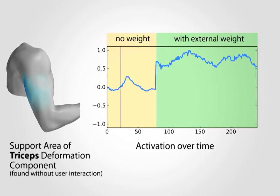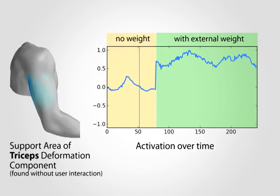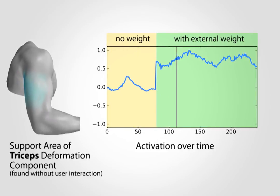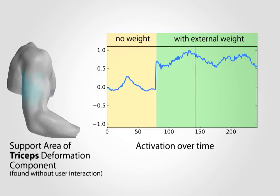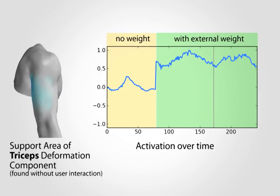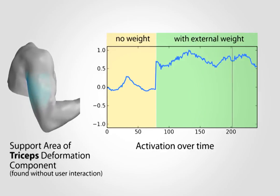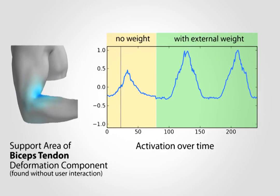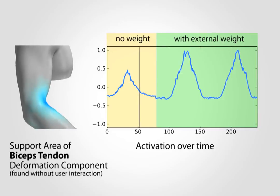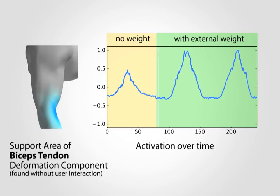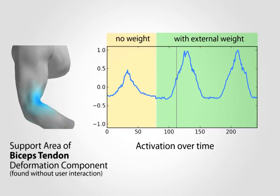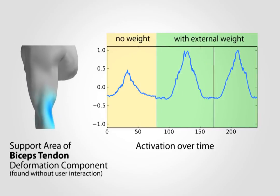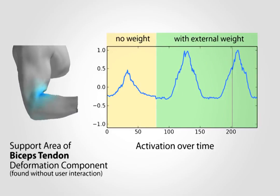To counteract this external load, the tricep muscle is summoned. This is reflected in the activation weight of the component. A similar analysis can be done for a component that our method discovered at the tendon of the bicep muscle, which is activated due to pose changes of the arm.